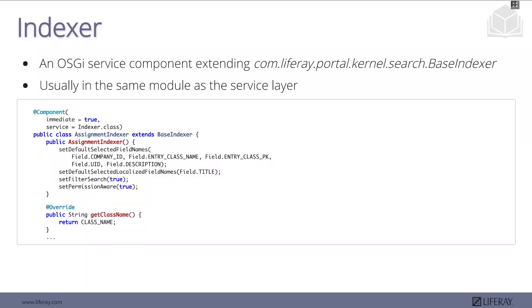This is done based off of the entity and we do have the ability to configure these things. In order to do this we're going to have an indexer — the indexer is a component that extends the base indexer class. This is going to be in the same module as our service layer, so you can probably see it — gradebook service, for example.